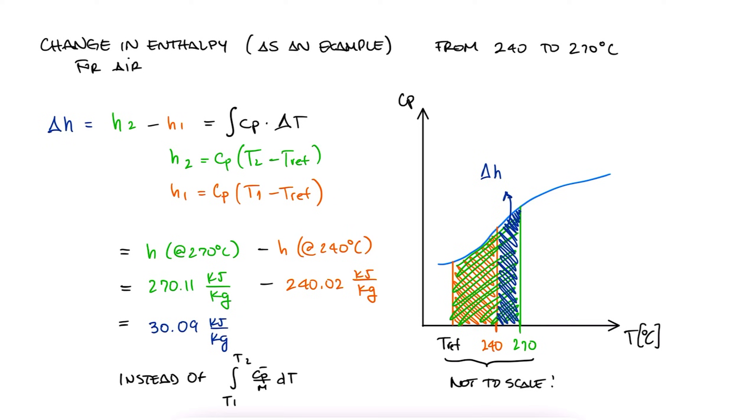So, to sum up, if we want to find the enthalpy change for any substance between any two temperatures, we have three options. Well, technically four. From most accurate to least accurate,